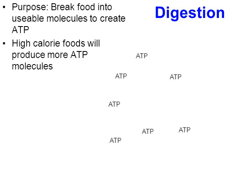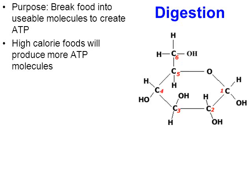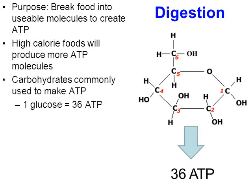Higher-calorie foods will produce more ATP molecules because they have more glucose in them — the more glucose, the more ATP will be created. One molecule of glucose, through a process called cellular respiration that we'll learn about later in this chapter, will actually be used to make up to 36 ATP molecules.